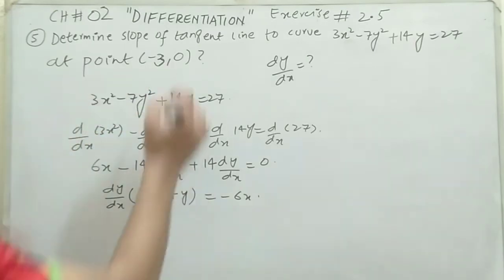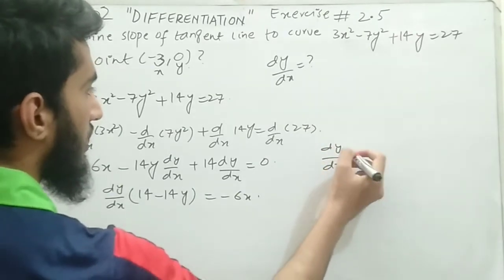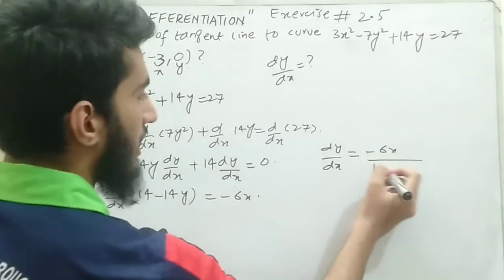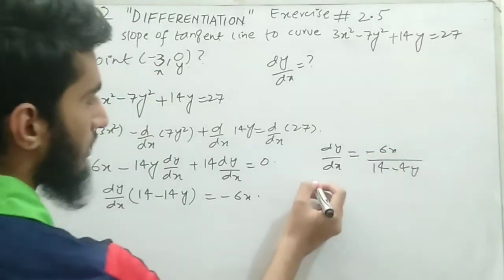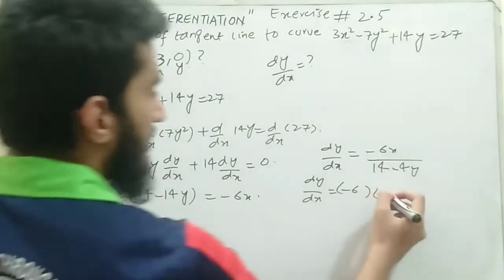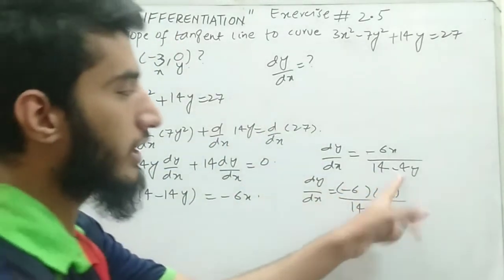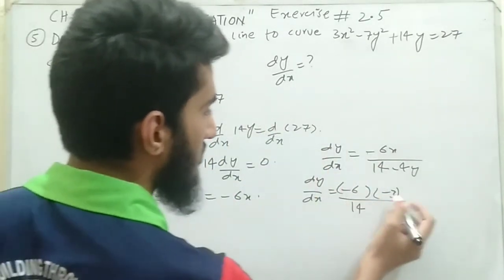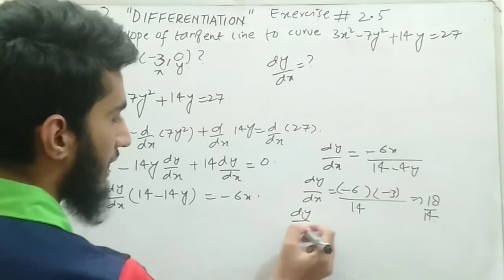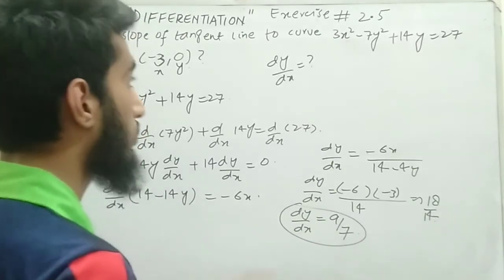Now we find the derivative at the point (minus 3, 0), where x equals minus 3 and y equals 0. Substituting: dy/dx equals minus 6x divided by (14 minus 14y). So dy/dx equals minus 6 times (minus 3) divided by 14 minus 14 times 0, which gives 18 divided by 14. Dividing numerator and denominator by 2, we get dy/dx equals 9 divided by 7. This is the required slope of the curve at the point (minus 3, 0).